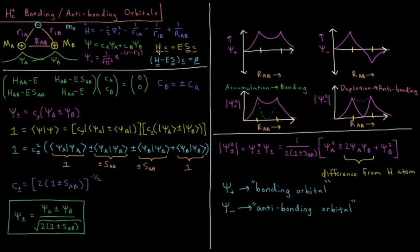We then use the linear variational method, or the matrix Schrödinger equation, to solve for the energies of this system: HC equals ESC, where H is the Hamiltonian matrix, C is the coefficient vector (cA, cB), E is the energy, and S is the overlap matrix with integrals over all space of the basis functions. We solve for the energies using the secular determinant, where the determinant of H minus ES equals zero.